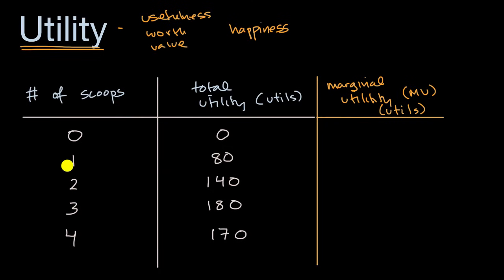And so we could start with that first going from zero to one. I'll start with that first scoop of ice cream. What's the marginal utility? Well, it gave you an incremental 80 units of utility. So the marginal utility is 80.